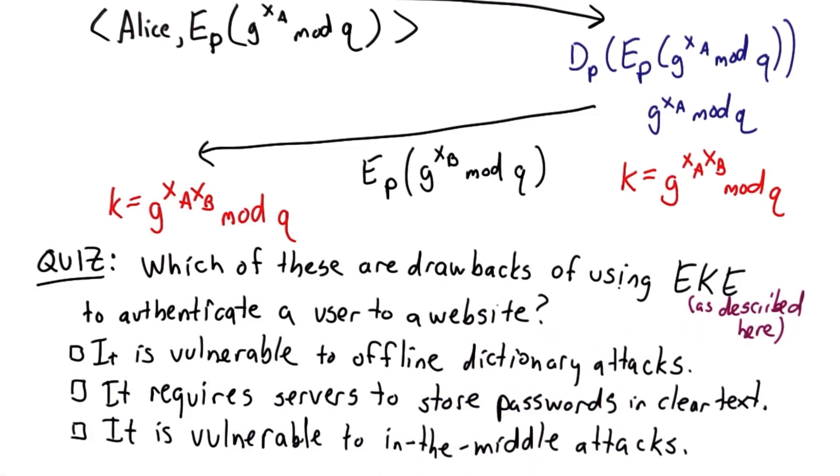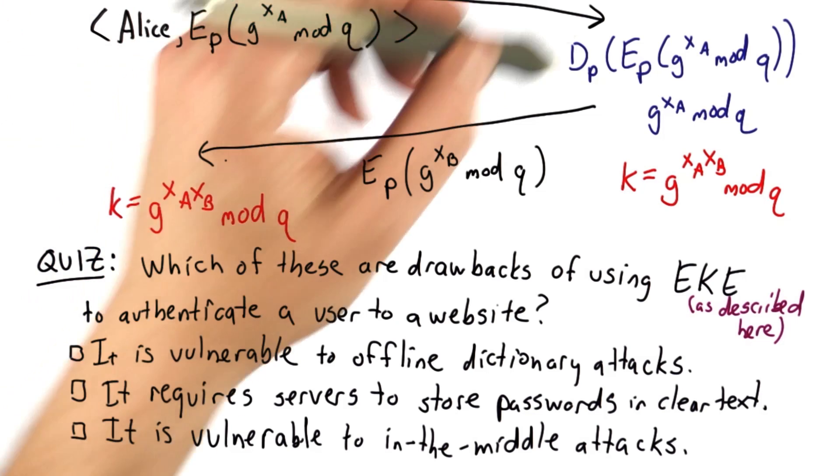Now we'll have a quiz to see if you understand the EKE protocol. The question is, which of these are drawbacks of using the protocol as we've described it here to authenticate a user, that would be Alice on this side, to a website, that would be the server on this side.